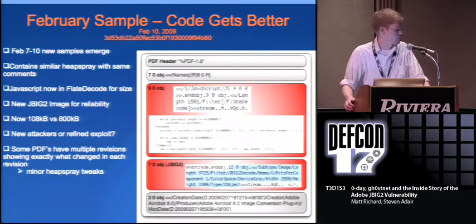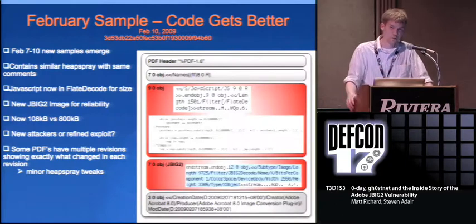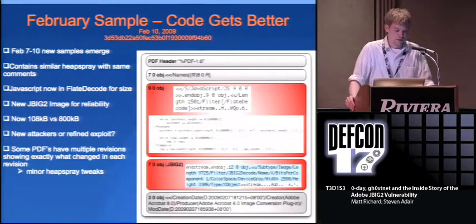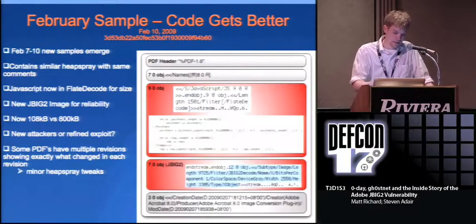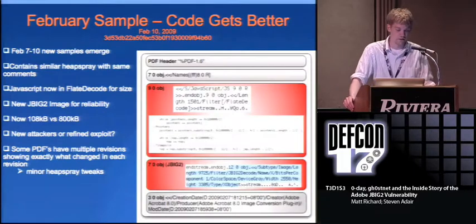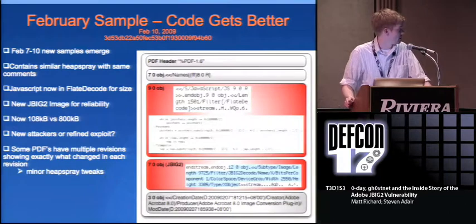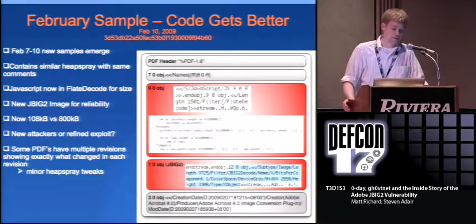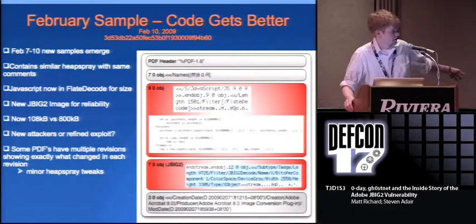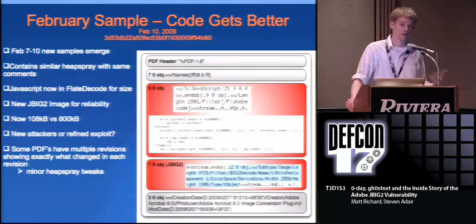February samples - this is where the code starts getting a little better. From February 7th and 10th, we start getting new samples. The PDF header changes, similar heap spray, same comments in the code - they were just reusing it. But the big difference: they dramatically shrunk the file because they used flate-encoded code. Instead of having all that gigantic octal encoding in the clear, it's now all encoded - so it took up a lot less space, going from 830 KB to about 108 KB. The question is: are these new attackers or just people who took the exploit and refined it? We never saw any overlap in command and control servers between the initial attackers and the new ones.